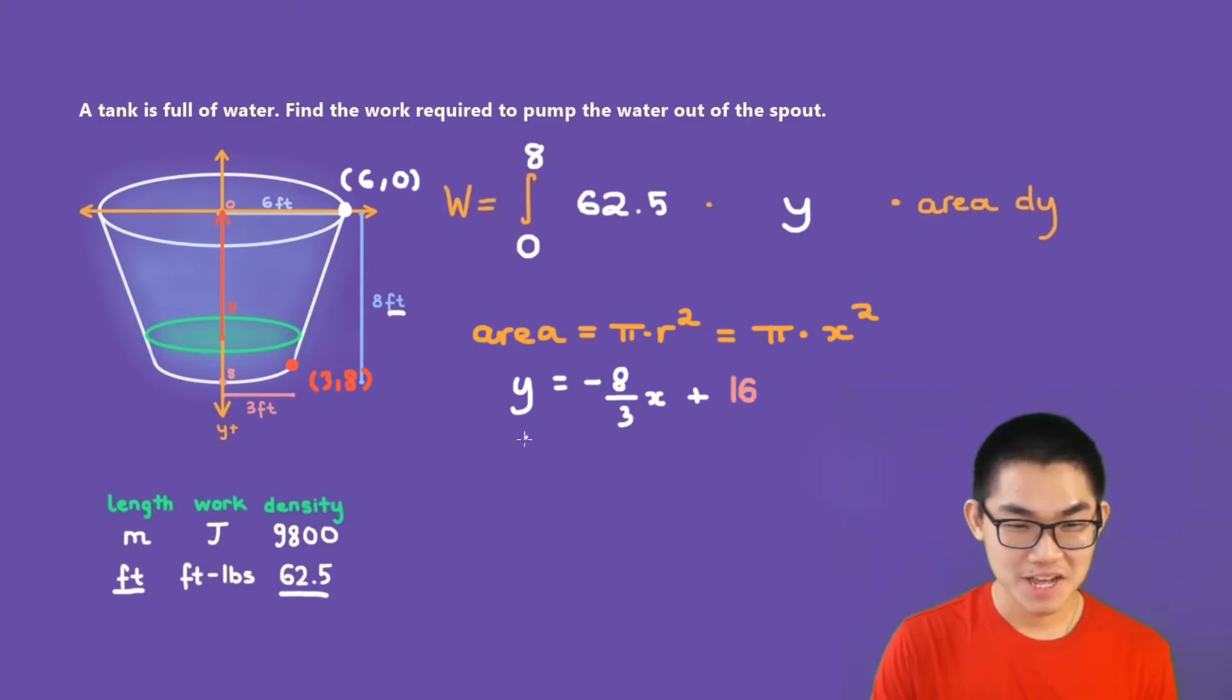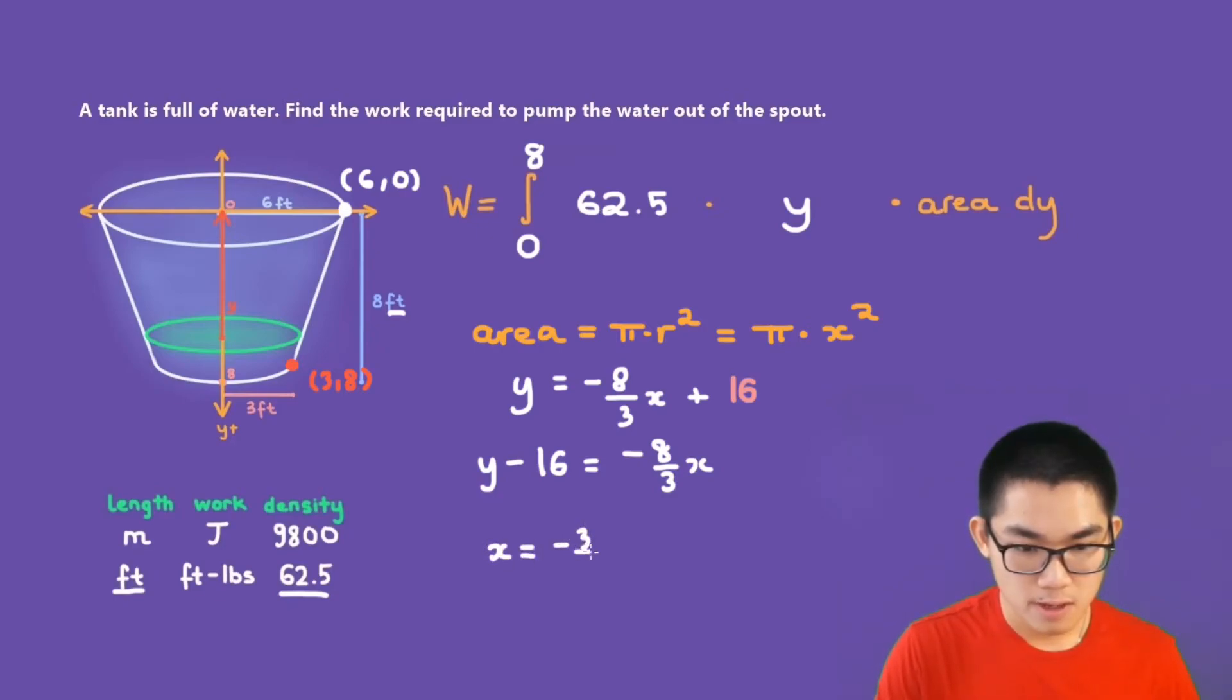So here is our equation, y is equal to negative 8 over 3 times x plus 16. Now let's solve for x. We subtract both sides by 16. So we get y minus 16 is equal to negative 8 over 3x. And then we multiply both sides by negative 3 over 8. So we get x is equal to negative 3 over 8 times y minus 16. So we finally found x.